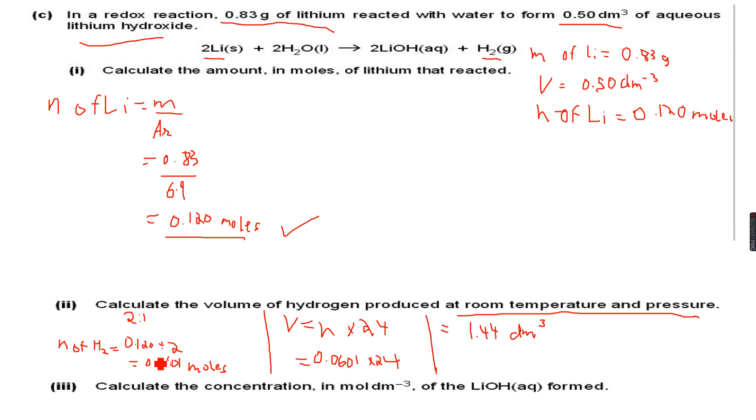The third part asks us to calculate the concentration in mol dm⁻³ of the lithium hydroxide formed. We know this equation is saying 2 moles of lithium gives us 2 moles of LiOH. Since there is no space here, I'm going to make an arrow and do this calculation here.